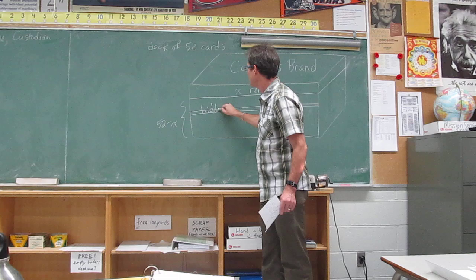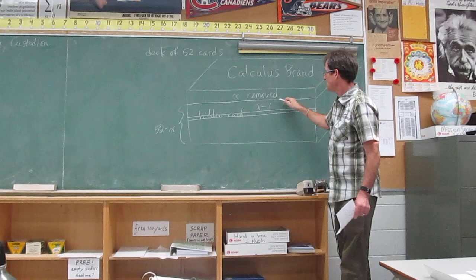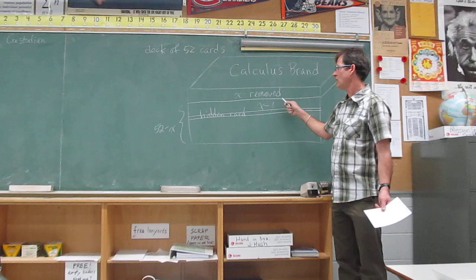Such that there were X minus one cards on top of this card, one less than the number removed. But I didn't know how many were removed, so I didn't know where this card was placed.